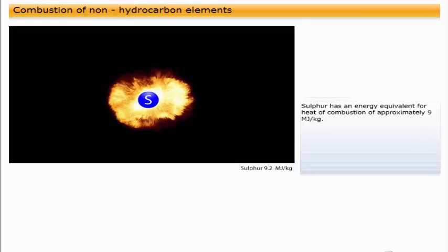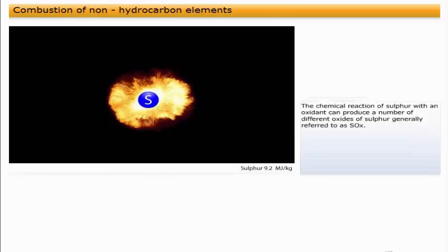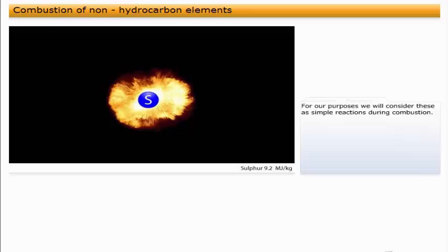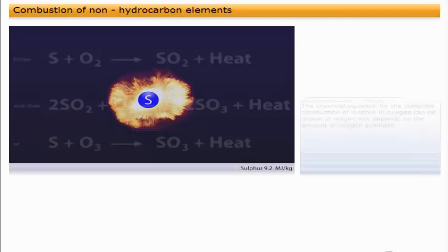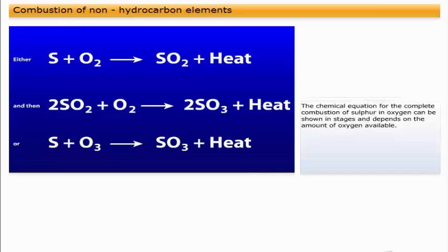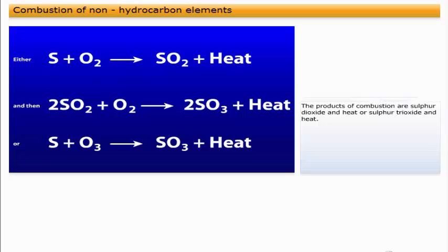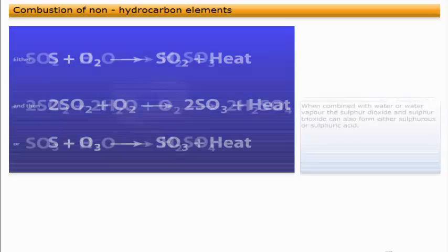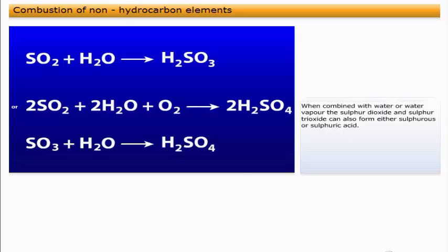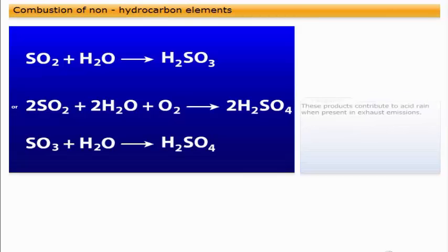Sulfur has an energy equivalent for heat of combustion of approximately 9 megajoules per kilogram. The chemical reaction of sulfur with an oxidant can produce a number of different oxides of sulfur, generally referred to as SOX. For our purposes, we will consider these as simple reactions during combustion. The chemical equation for the complete combustion of sulfur in oxygen can be shown in stages and depends on the amount of oxygen available. The products of combustion are sulfur dioxide and heat or sulfur trioxide and heat. When combined with water or water vapor, the sulfur dioxide and sulfur trioxide can also form either sulfurous or sulfuric acid. These products contribute to acid rain when present in exhaust emissions.